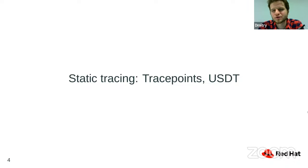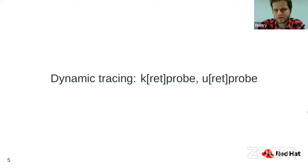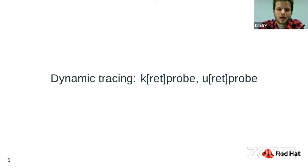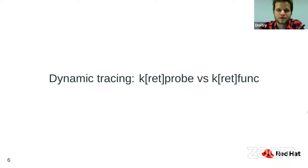When modifying source code is not possible or you want quick troubleshooting, you can use dynamic tracing — represented by kprobes for kernel space and uprobes for user space. You can define trace points almost anywhere you want, as long as you have enough debugging information. You can get information about almost any instruction in your programs. There's also a third resource called kfuncs alongside kprobes, which is relatively new.